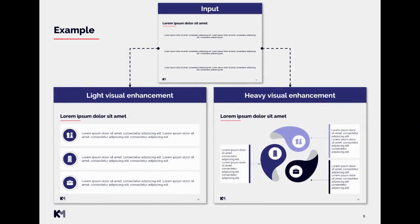Here we have a small example. We have an input with basically three sentences. On the left you can see the light visual enhancement — it's essentially brushed up with the addition of icons. The heavy visual enhancement has a more creative structure, adding more graphical elements beyond just icons. The creative effort is much bigger than in the light visual enhancement example.